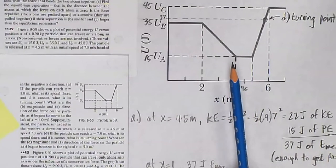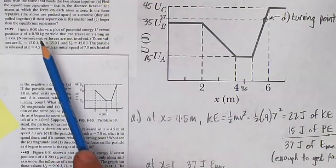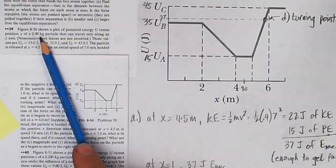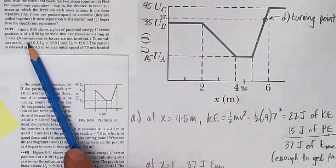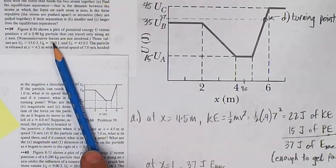In this figure, we have a plot of potential energy versus position as a 0.9 kilogram particle that can only travel along an x-axis moves with no conservative forces involved.